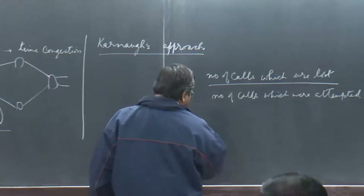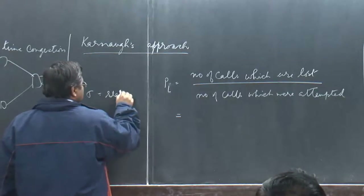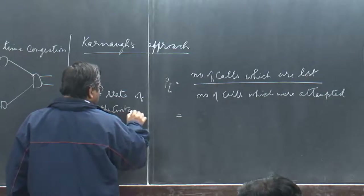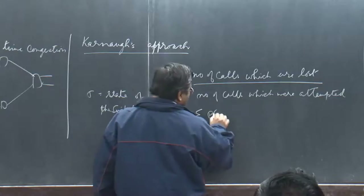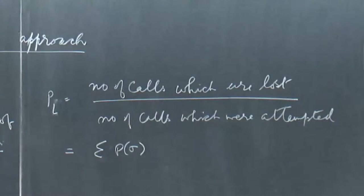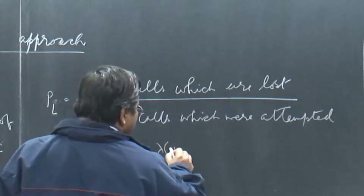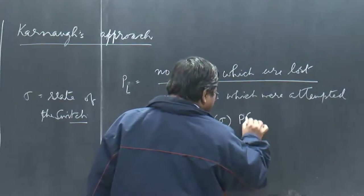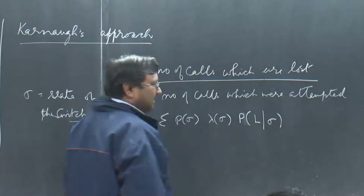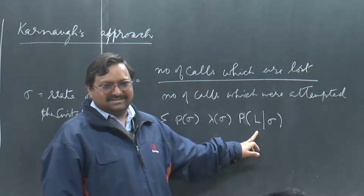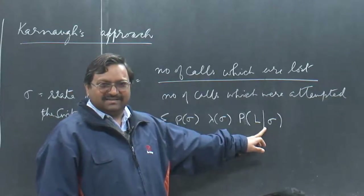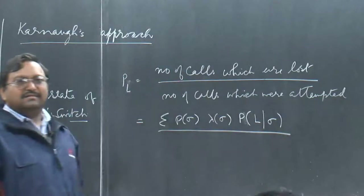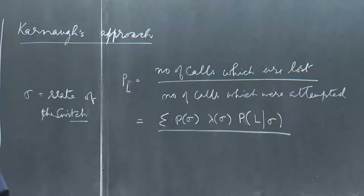In this case, I will assume sigma is the state of the switch — I am going for the state of the switch, not state-dependent variables. I can write this as: probability that the switch is in state sigma, then summation over all states. The arrival rate also depends on the state of the switch, and given state sigma, there is a conditional probability that the call will be lost. Sigma is the state of the switch — how many calls are through, what is the current setup.